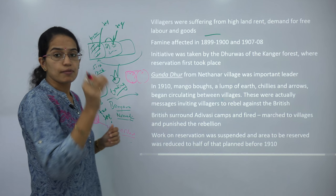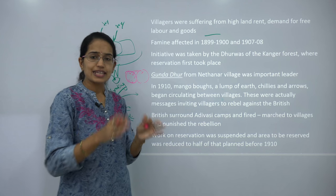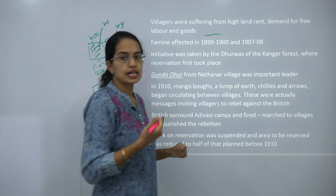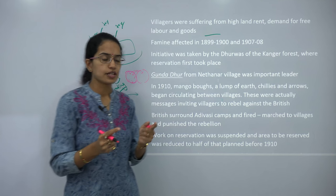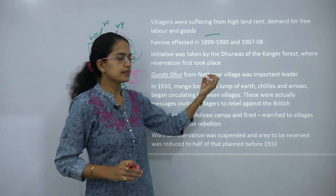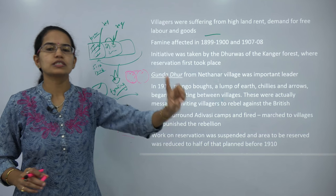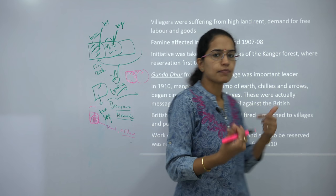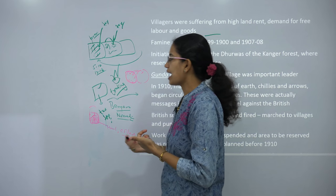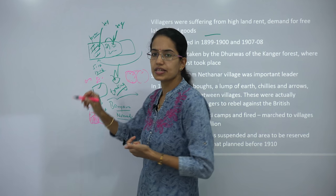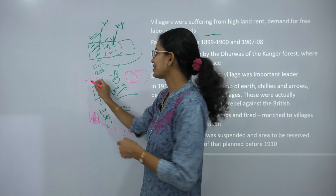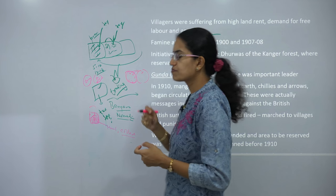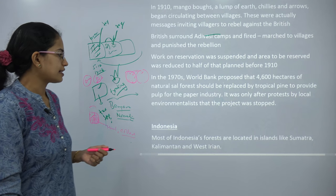There were numerous initiatives taken to raise voices against the Britishers. Among the tribal groups, they used to circulate pieces of earth, chillies, or arrows — symbols which circulated within the community showing they were planning to rebel. Similar to how people moved roses from one place to another as a symbol supporting the independence movement against Britishers, in the tribal groups it was in the form of chillies, arrows, or local earth pieces that they circulated.